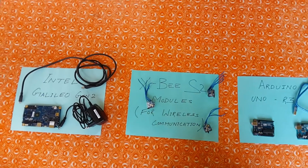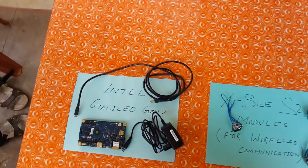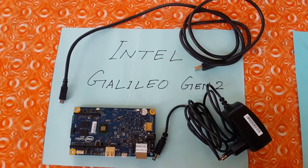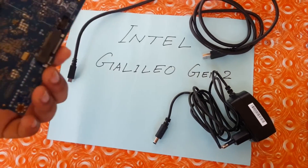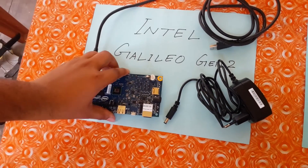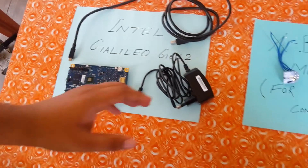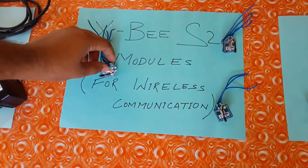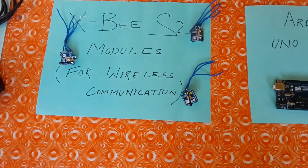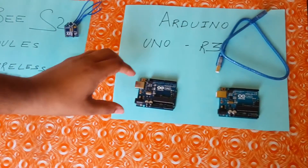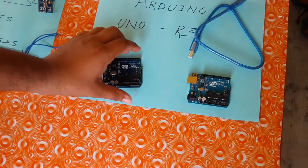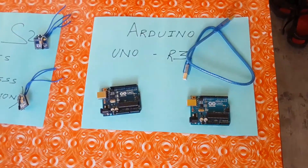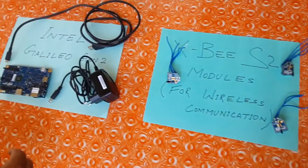These are the components that we are using for a prototype. The first one is the Intel Galileo Gen 2 board. Next we have the XBee modules for wireless communication. And then we have two Arduino Uno R3 boards. Now I will explain each individually.